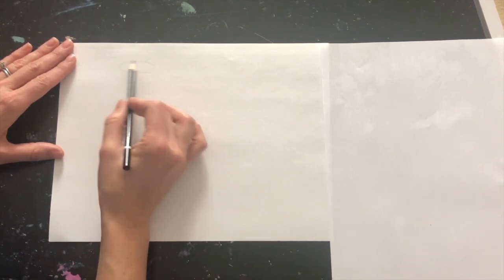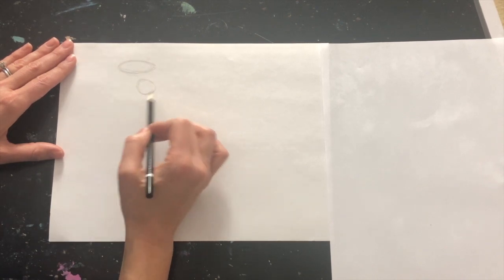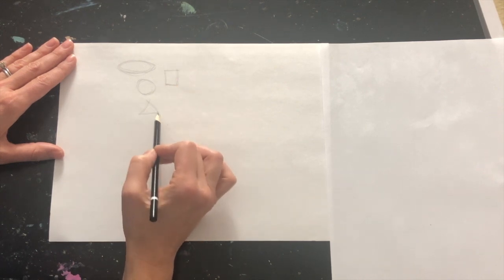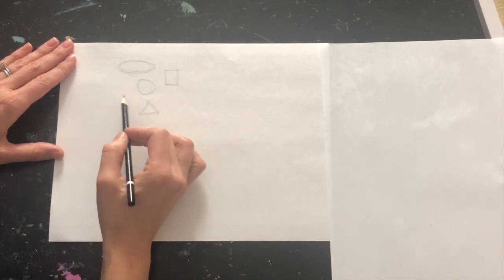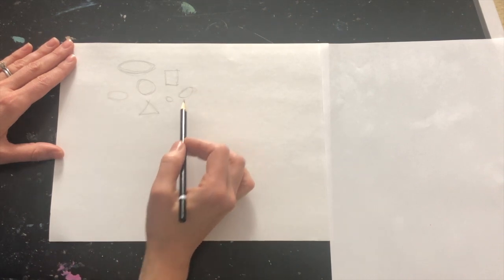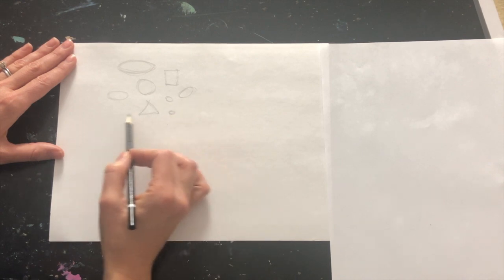To warm up, what I like to do is just start drawing some simple shapes. Maybe some ovals, some circles, some squares, some triangles, and as you can see I go over lines multiple times just to kind of get a feel for that shape. Just have fun with it.